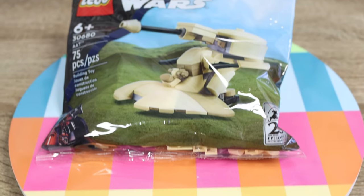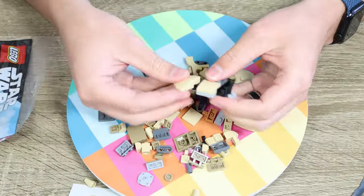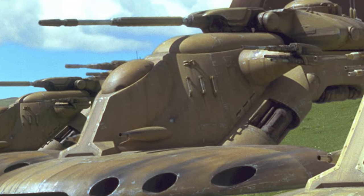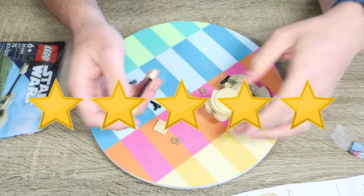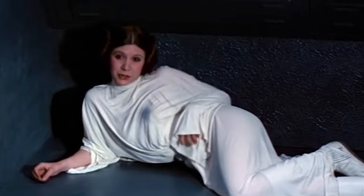Oh, a Star Wars polybag. Time to rip it open and build a pretty decent looking AAT. That's not terrible. Oh yeah. And that's it. An AAT. Doesn't it seem a little small to be an AAT?